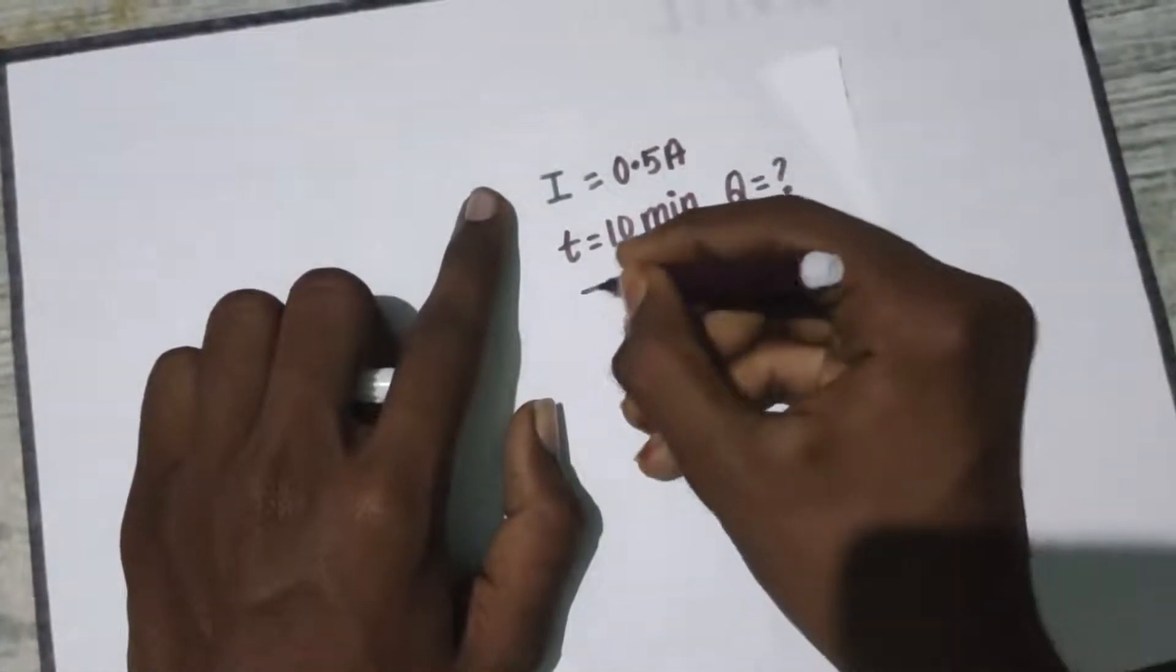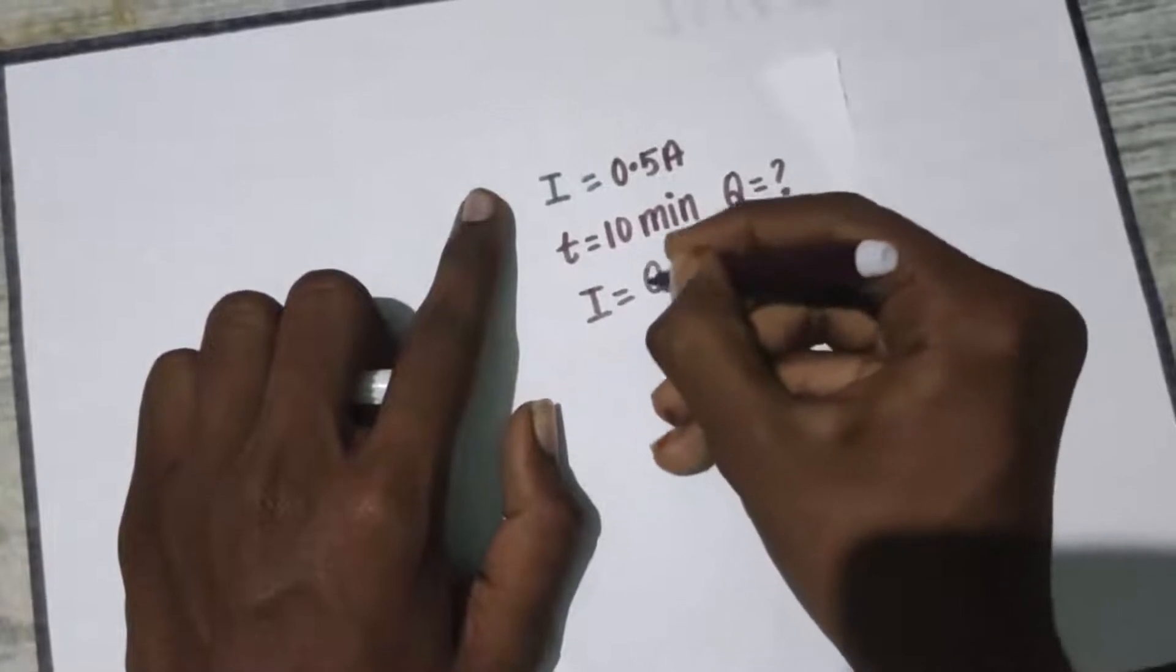You will be able to recollect. I is equal to Q by T. That is the formula.